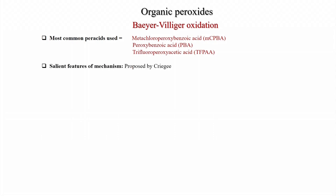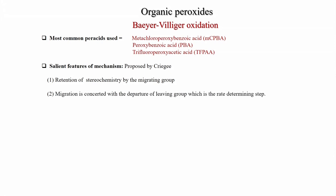The salient features of the mechanism proposed by Criegee include: retention of stereochemistry by the migrating group — this is very important, if there is a chiral center that stereochemistry is retained during this reaction. Migration is concerted with departure of the leaving group, which is the rate-determining step.